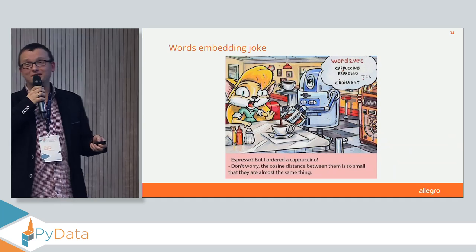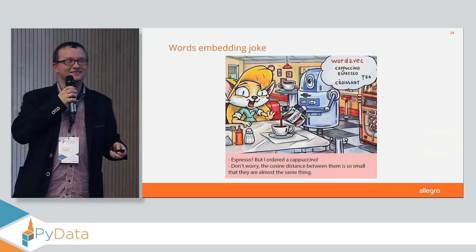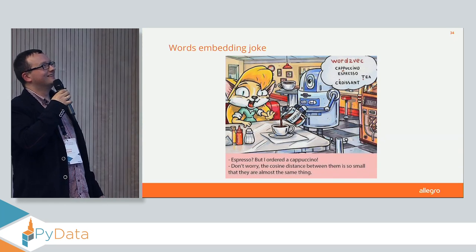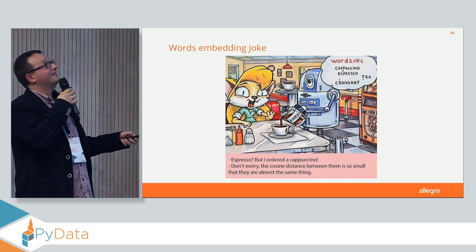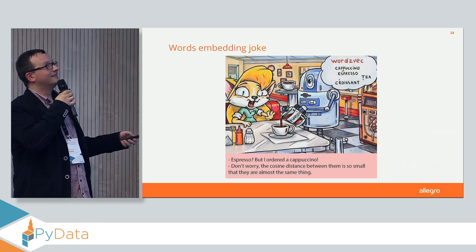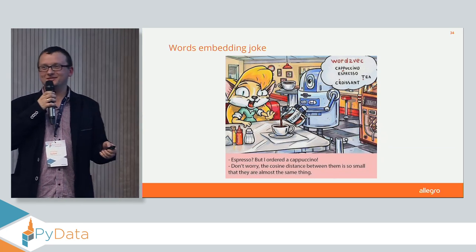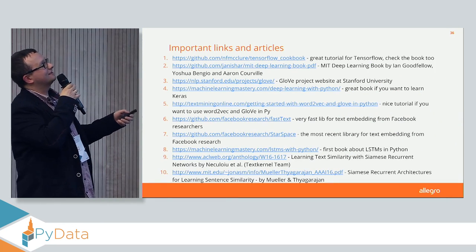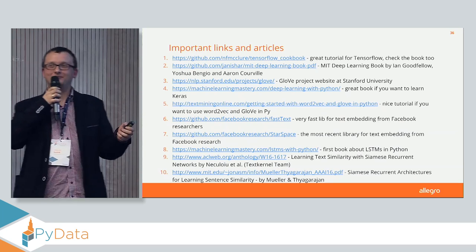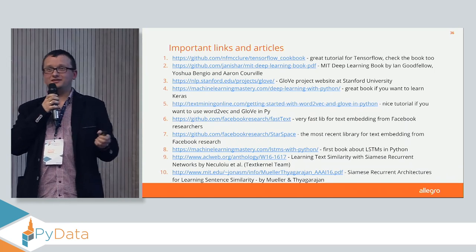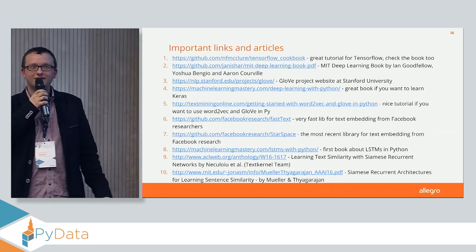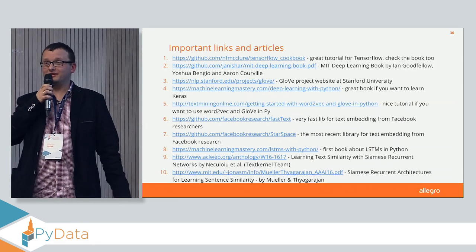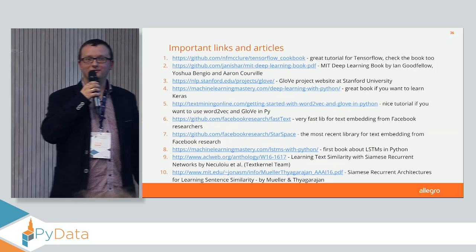We found a word embedding joke available online — if you're familiar with Word2vec models and cosine distances, you might find it quite funny. And this is our last slide with some links, nice articles, and books about deep learning, Siamese architecture, and word embedding. Thank you very much, and we'd be happy to take questions.